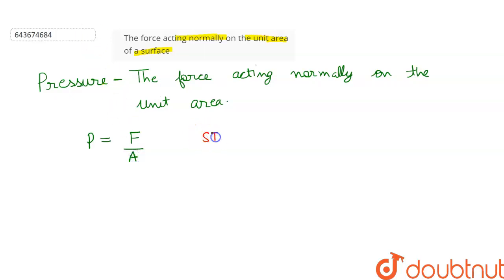SI unit of pressure is Pascal, which is written as Pa, and the most common unit of pressure is newton per meter square.